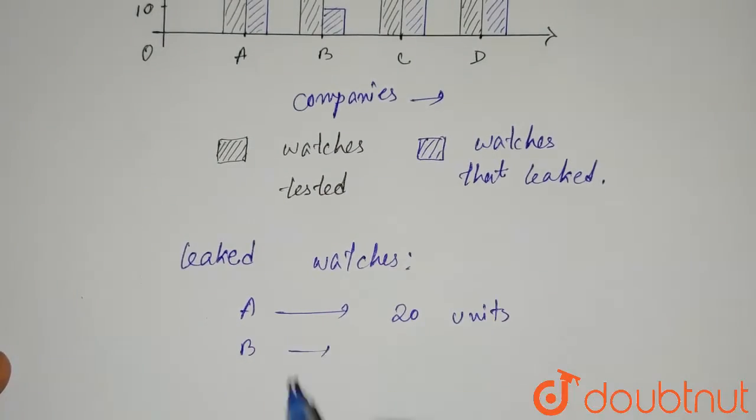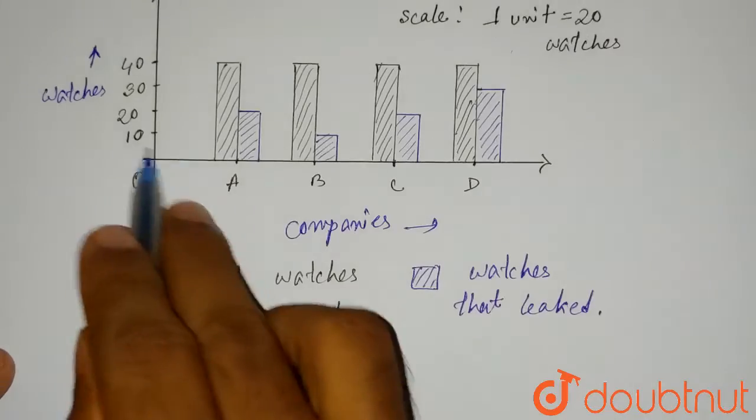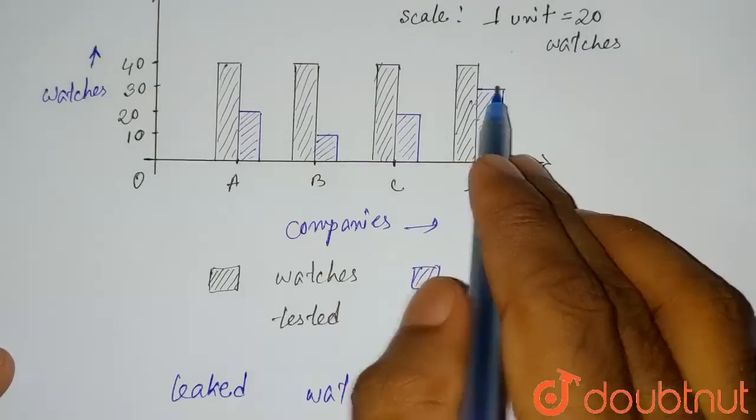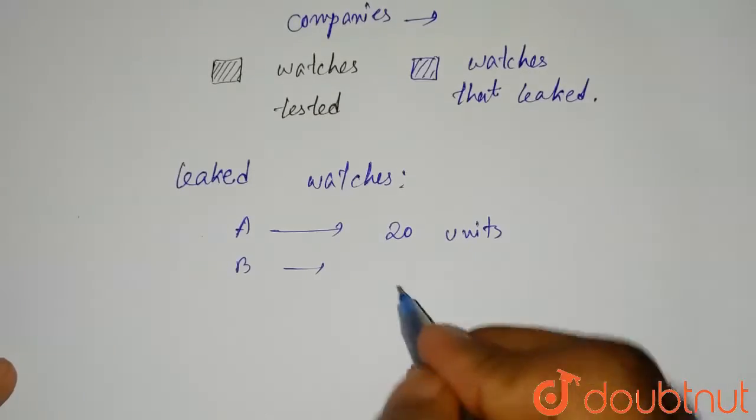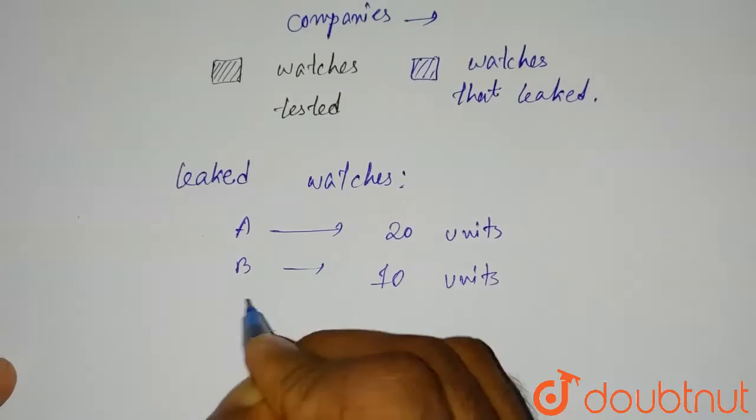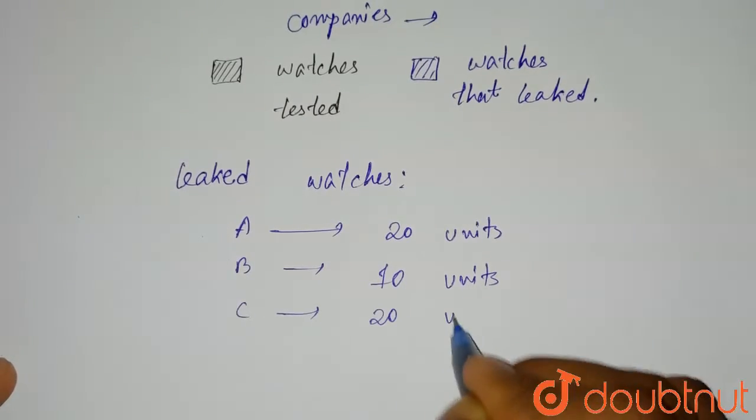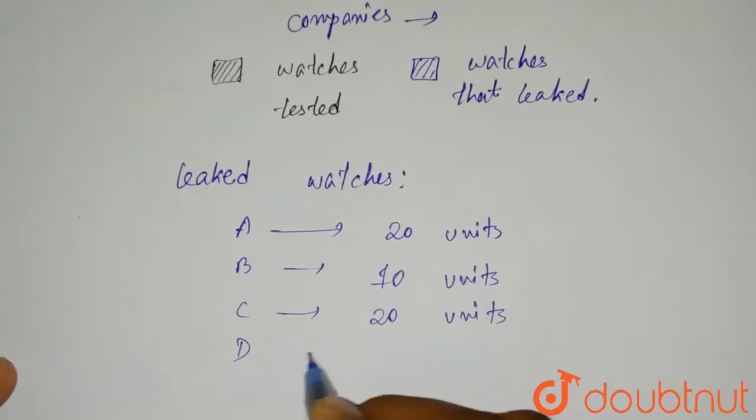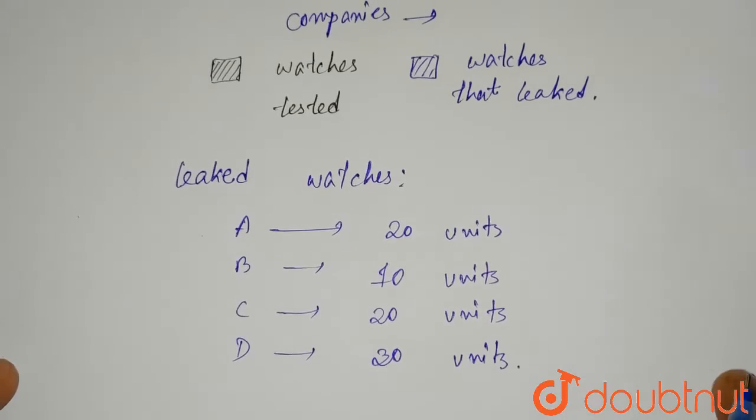For B it is 10, C it's 20 and for D it's 30. For B it's 10 units, C it's again 20 units and for D it is 30 units.